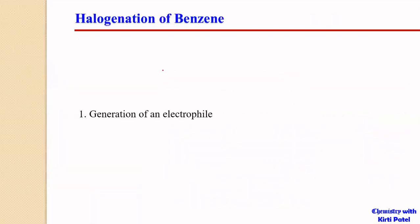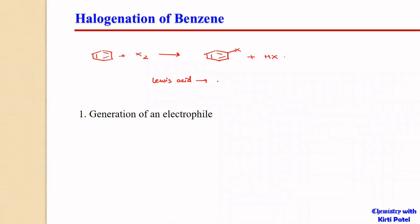Now we will look at the halogenation reactions. A halogenation reaction can be characterized as a benzene ring reacting with a halogen X2 to give halobenzene, with an HX molecule released. This requires a catalyst — generally Lewis acids such as FeCl3 or anhydrous AlCl3 are used. FeCl3 and AlCl3 are very good for catalyzing chlorination as well as bromination reactions.